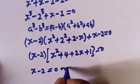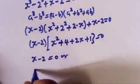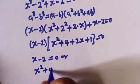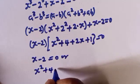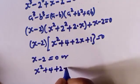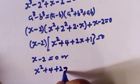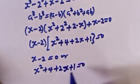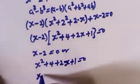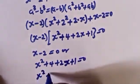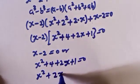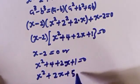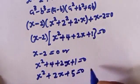Now this gives us s minus 2 equal to 0, or s squared plus 2s plus 4 plus 1, that is s squared plus 2s plus 5, is equal to 0.